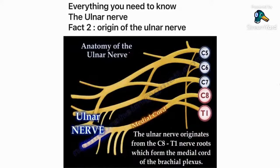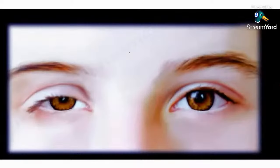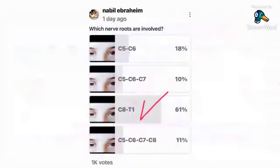Another fact is the origin of the ulnar nerve — it comes from C8 and T1. That's the same nerve root level that can give us Horner's syndrome, which means a bad prognosis for brachial plexus injury. When we ask which nerve roots are involved, it's C8 and T1, the same as the ulnar nerve.